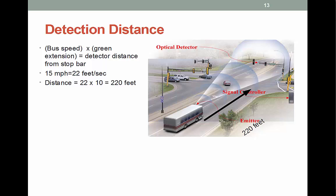Here is a sample detection distance discussion. We are talking about how far back from the traffic stop bar we should place the call so that we can use the full advantage of green extension. It's a basic calculation: multiply the bus speed by the green extension time to find that distance. So if a bus approaches the light at 15 miles per hour — that's 22 feet per second — times 10 seconds of green extension time, you activate the call 220 feet back from the stop bar.